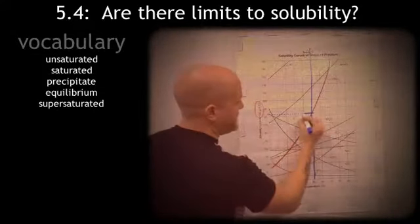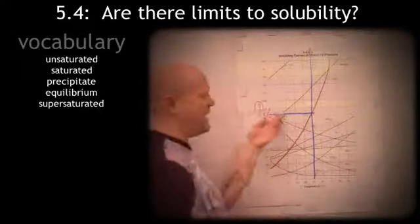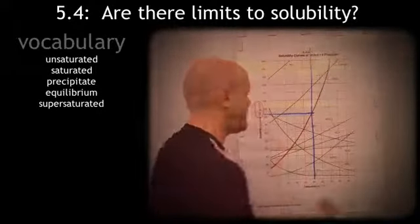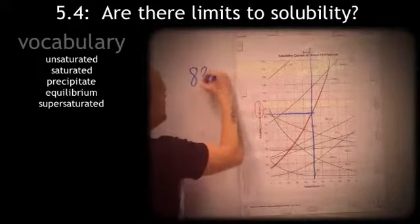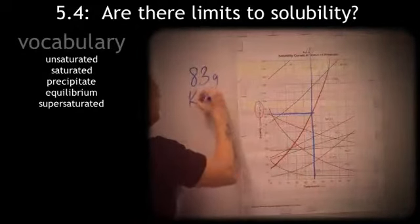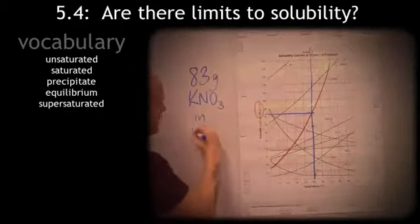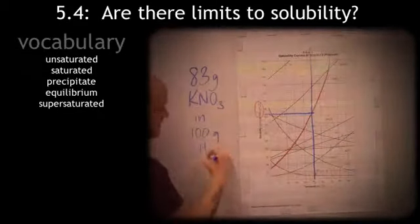So, where these two lines intersect is roughly, I would say, 83 grams, give or take a gram. So, roughly 83 grams of potassium nitrate will dissolve in 100 grams of water.